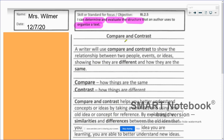A writer will use compare and contrast to show the relationship between two people, events, or ideas, showing how they are different and how they are the same. So compare and contrast are already bold, so I'm not going to highlight those.